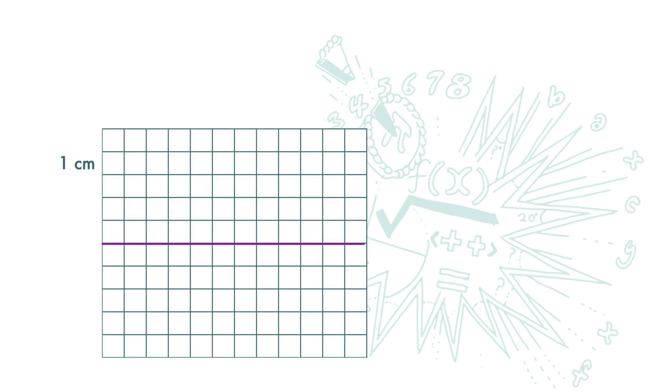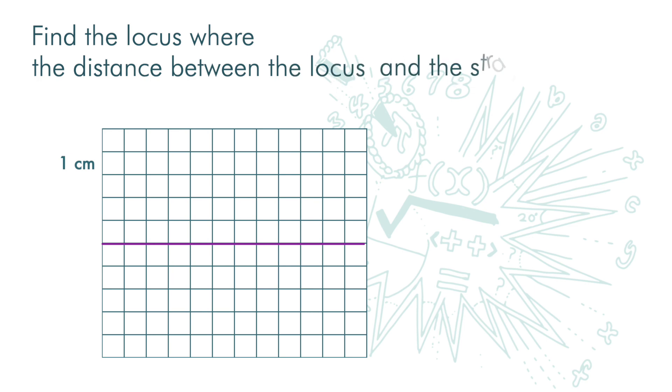Here we have a straight line. And we want to find the locus where the distance between the locus and the straight line is always 4 cm.